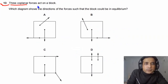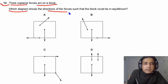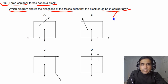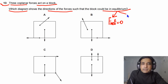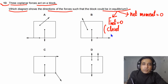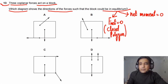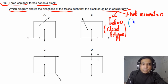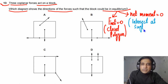For question number 13, three coplanar forces act on a block, and we need to find which diagram shows the forces such that the block is in equilibrium. For equilibrium, two conditions must be fulfilled: first, net force in any direction must equal zero, meaning forces form a closed polygon; and second, net moment about any point must equal zero, meaning all forces intersect at a single point.